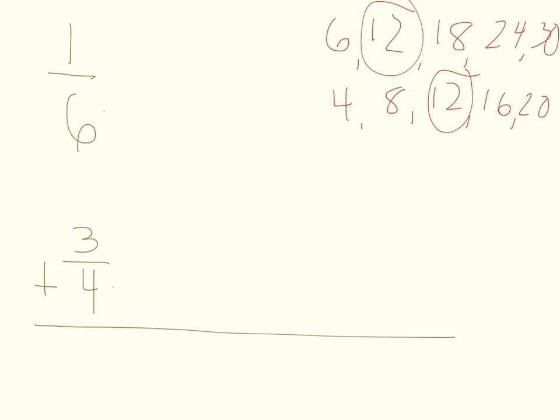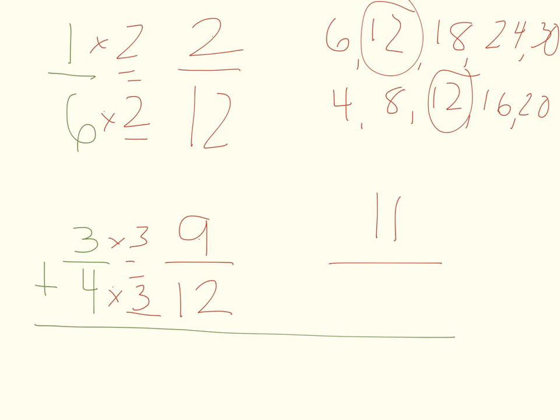So 6 times what is 12? That would be 2. So I'm going to do the same thing to the numerator. Remember, whatever you do the numerator, you must do to the denominator. And 4 times what? It's 3. So I'm going to do the same thing to the numerator. I'm going to do the same thing to both. So now I have my problem to add. 2 plus 9 is 11. And 12 remains the same. 11 twelfths. They're one away from each other, so I know it's in simplest form.